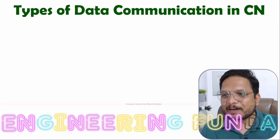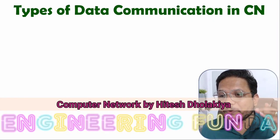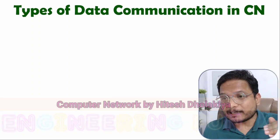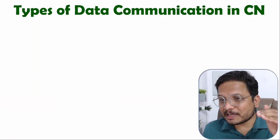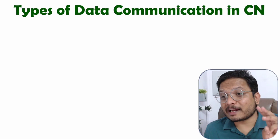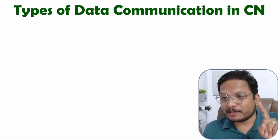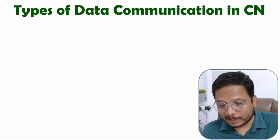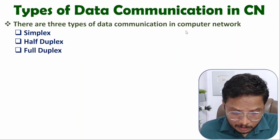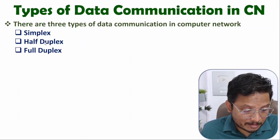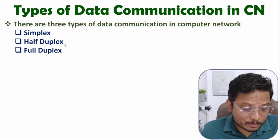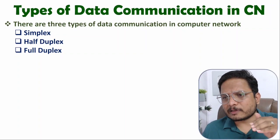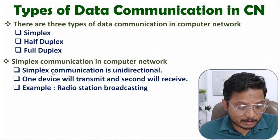Hello friends, welcome to Engineering Funda. In this video I'm going to explain types of data communication in computer networks. In general there are three categories: simplex, half duplex, and full duplex. Let me explain all of these along with practical examples to give you more clarity.